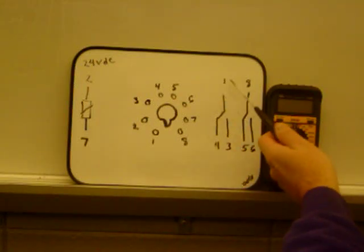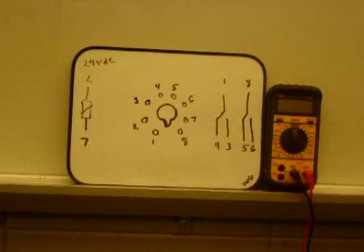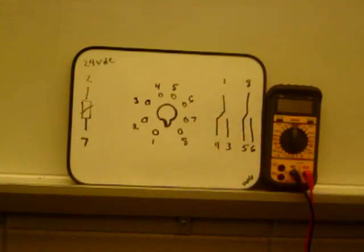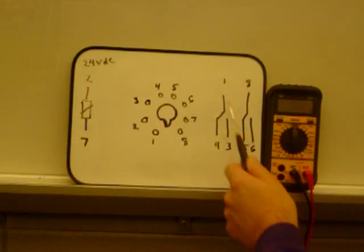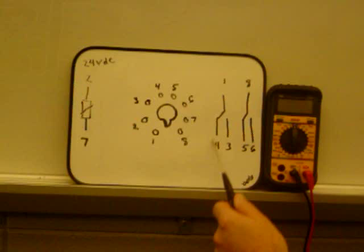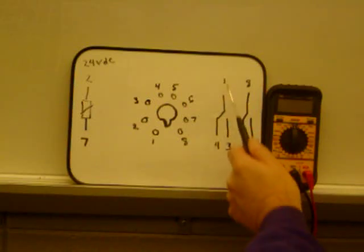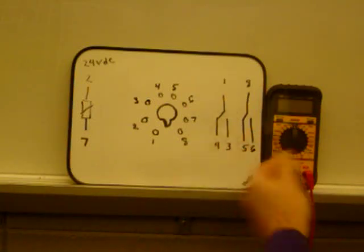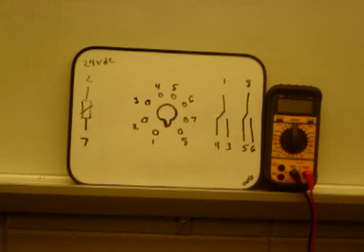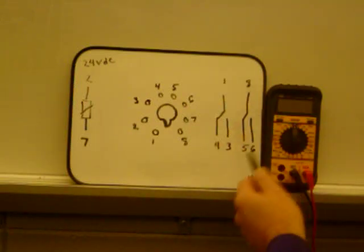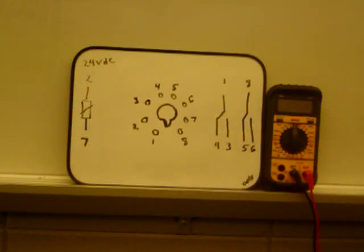That means that one to four is a normally closed set of contacts, whereas one to three is a normally open set of contacts. A lot of these relays will do that where you can choose either to use normally closed one to four so that when it energizes, this opens, or you can choose normally open one to three so when it energizes, it closes. So they give you a lot of versatility with these things, and of course it's symmetrical. I've got eight, five, and six works the same as one, four, and three.